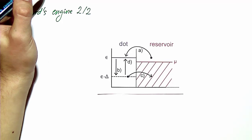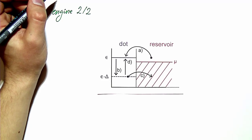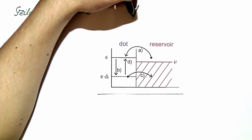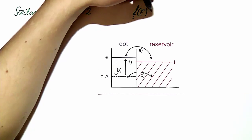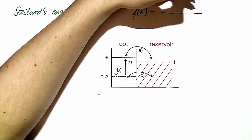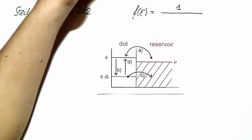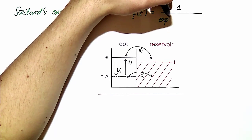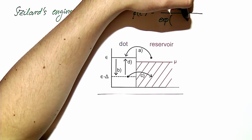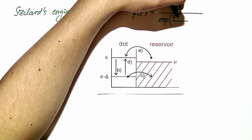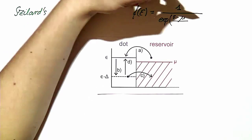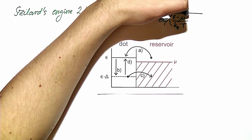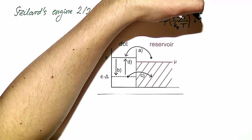This probability is given by the Fermi distribution function in the reservoir. The Fermi distribution function is given by the well-known formula: 1 over the exponential function with argument (energy minus electrochemical potential) over Boltzmann constant times temperature, plus 1.